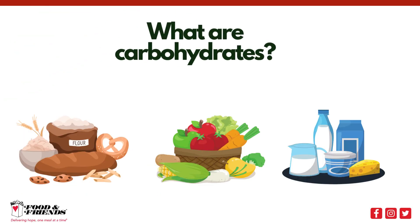Carbohydrates are sugar molecules. They are a type of macronutrient along with protein and fat. Macronutrients are nutrients in food that our bodies need in large quantities in order to get enough energy. Carbohydrates are found naturally in many plant-based foods such as grains, fruits, and vegetables.